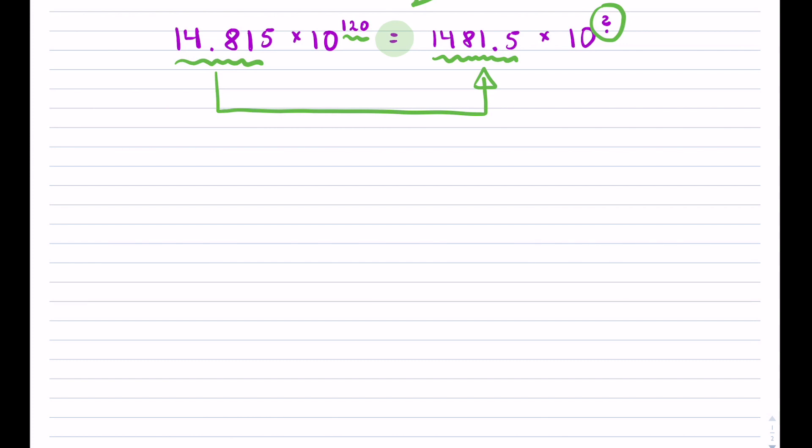My leading number was 14.815 and now it transitioned into 1481.5. So as you can see, it got bigger in magnitude. It got bigger in magnitude by multiplying it by 10 two times.